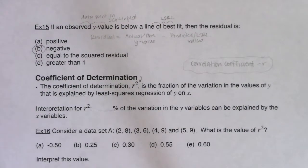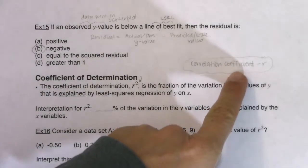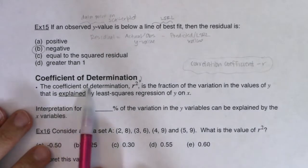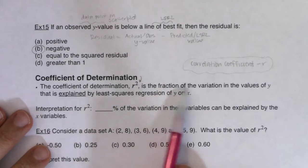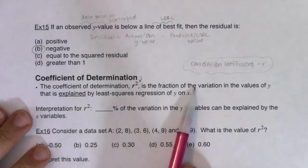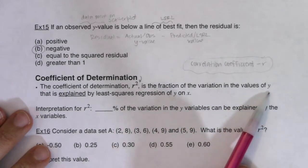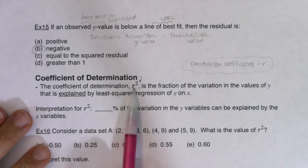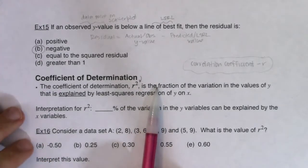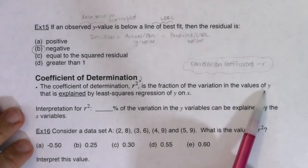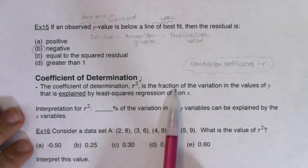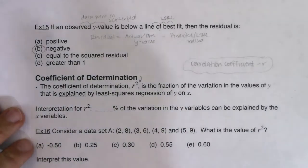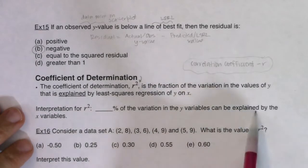This gives us our fourth statistic to interpret. We've already interpreted r, the y-intercept, and the slope — now we add r squared. The coefficient of determination, or r squared, is the fraction of variation in the y values that can be explained by the least squares regression line of y on x.